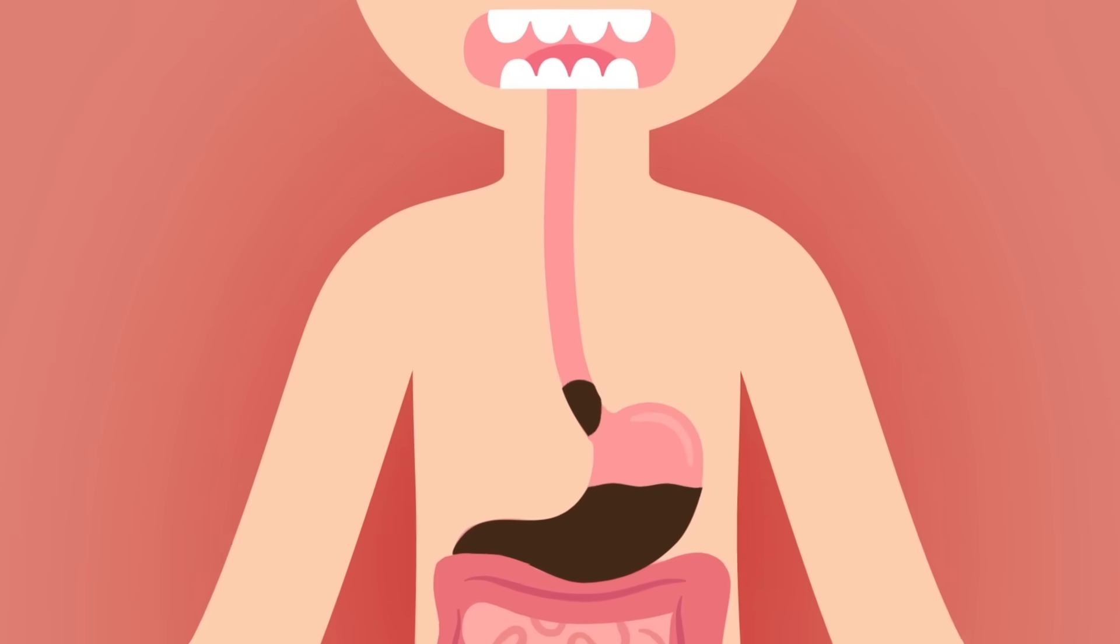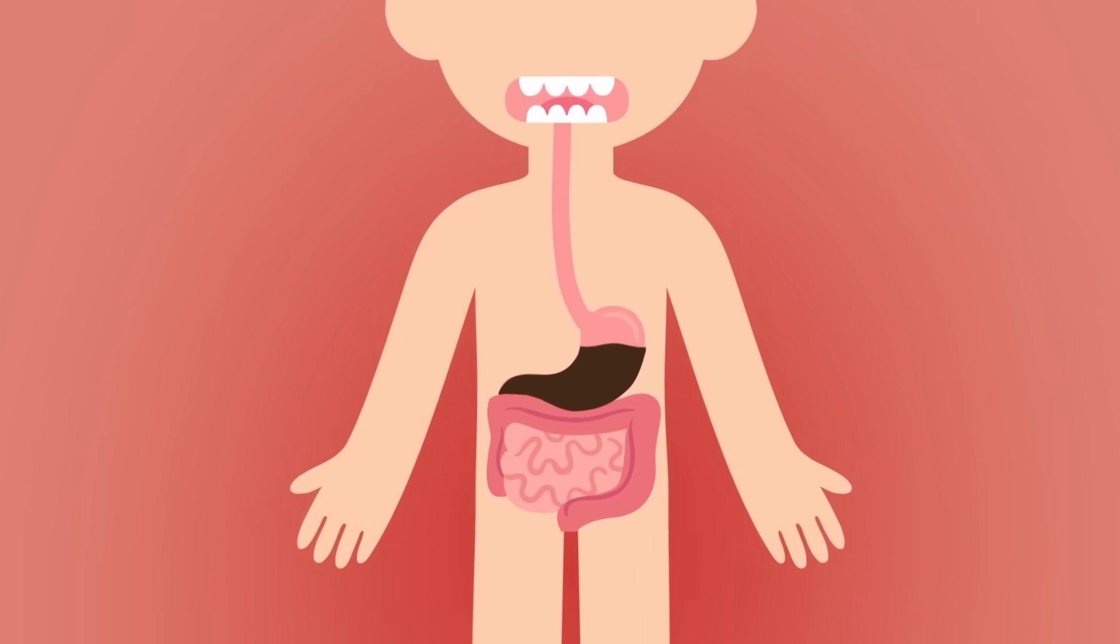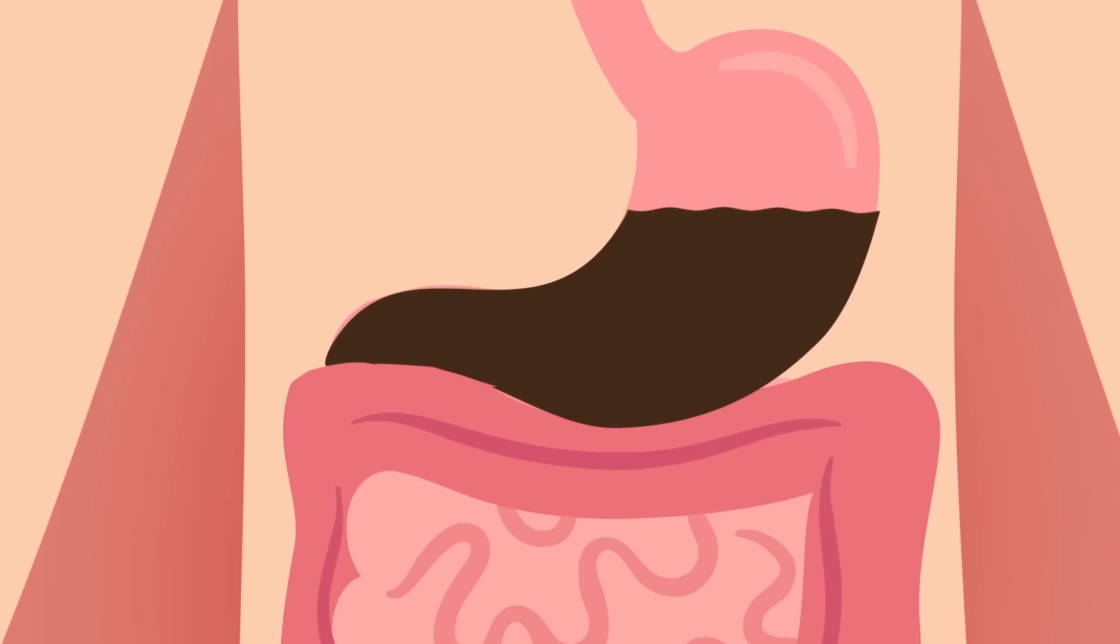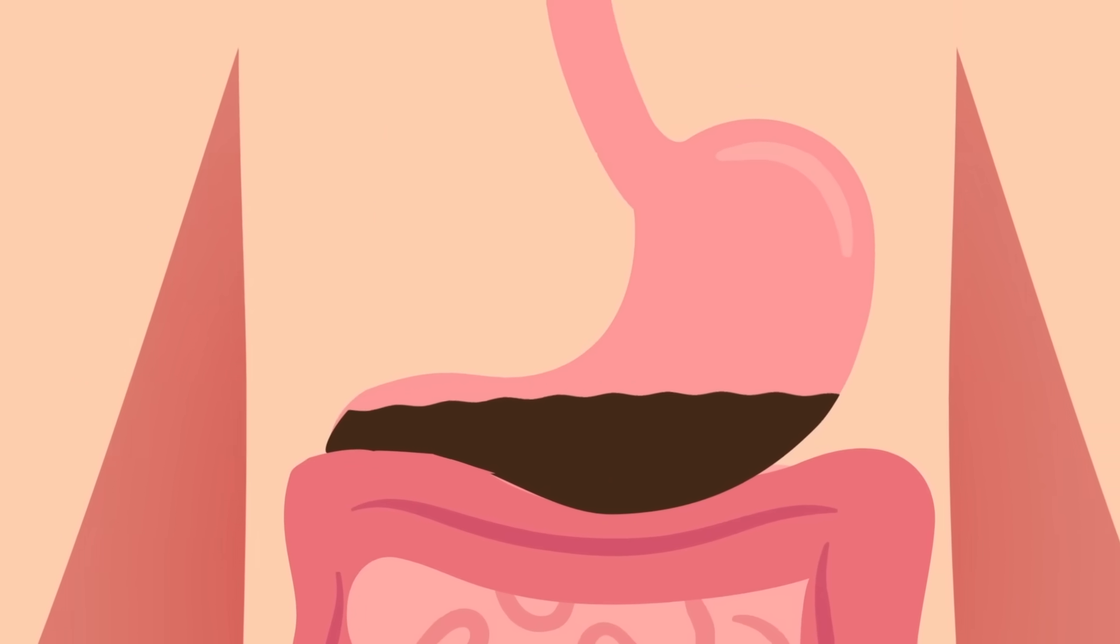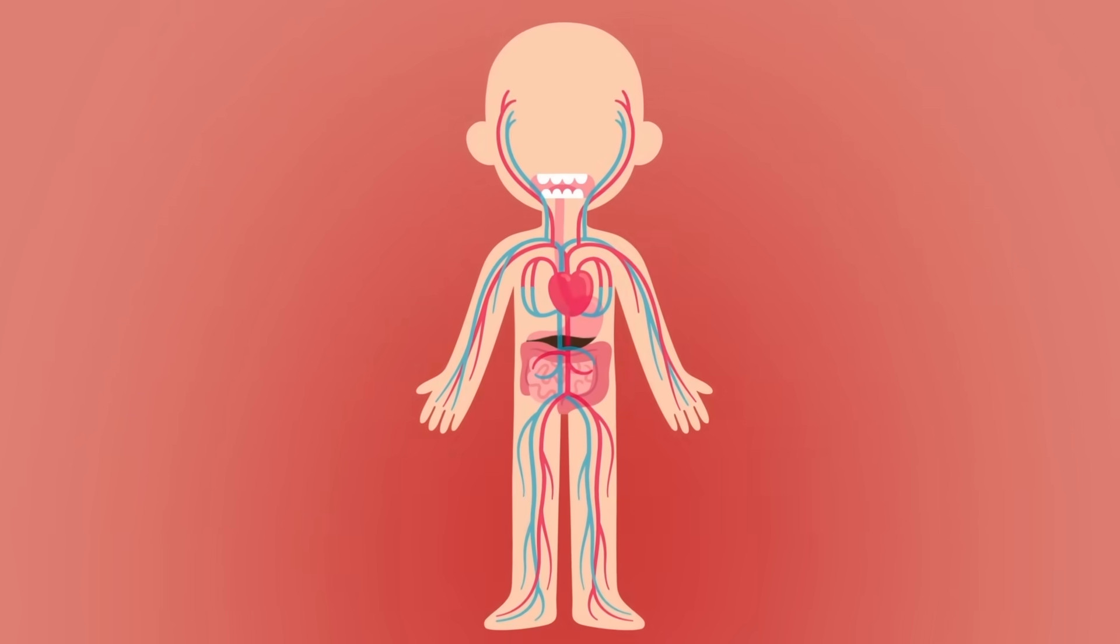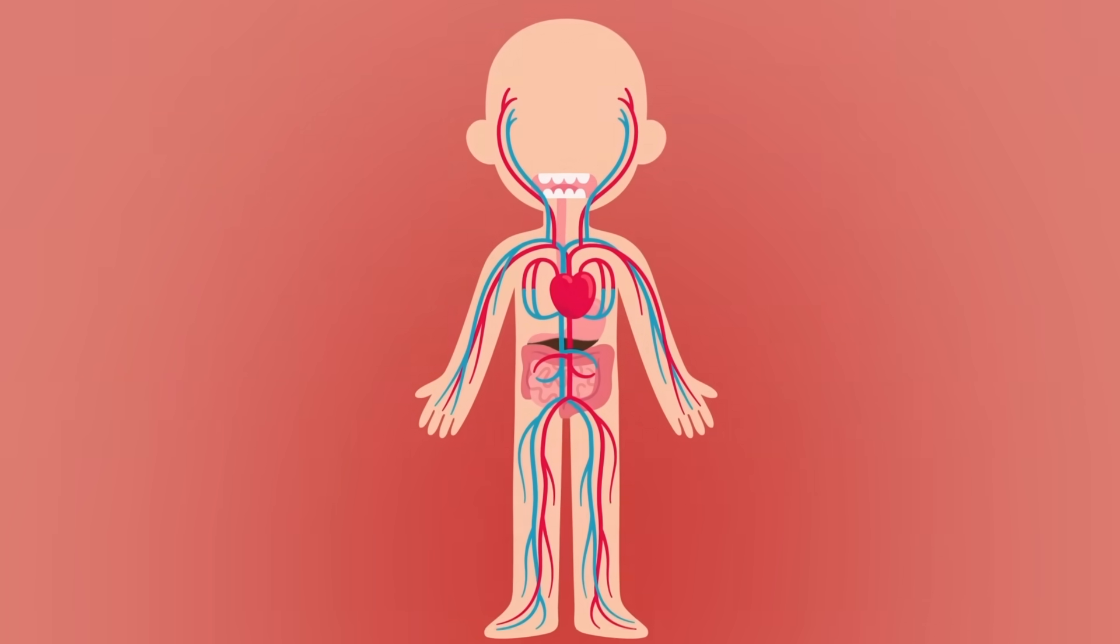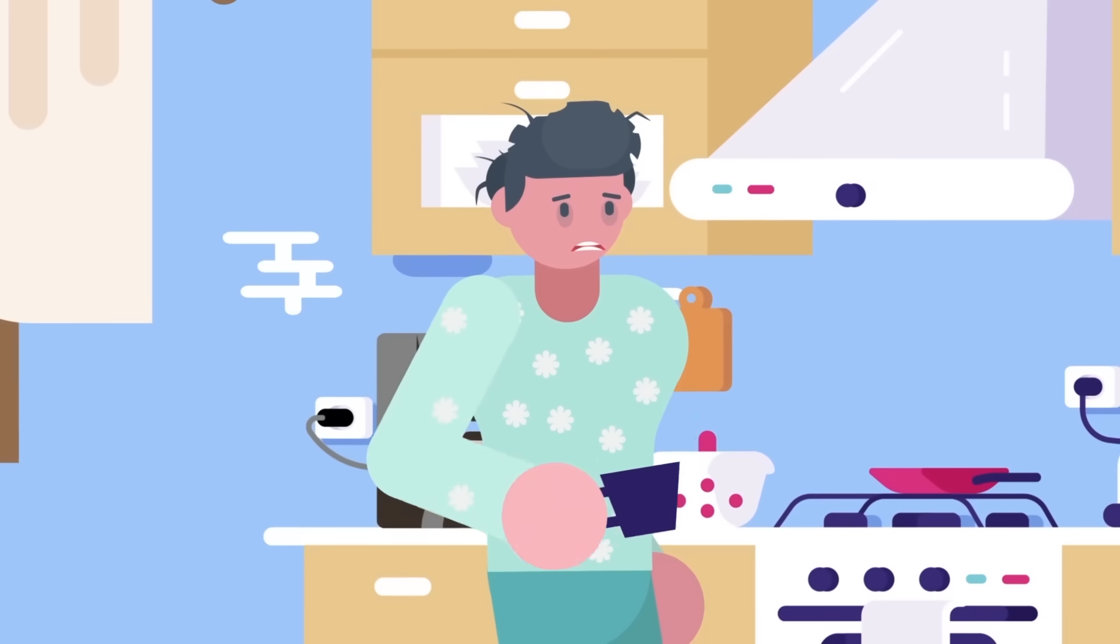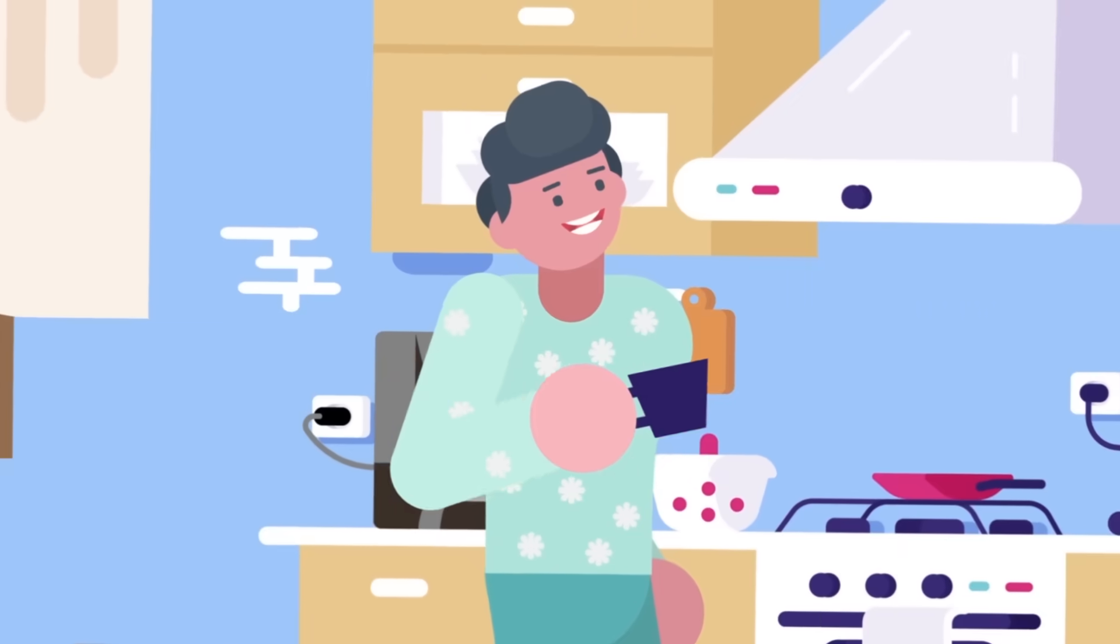Moments after your last sip of coffee, the liquid will descend down your esophagus and into your stomach. From there, some of the caffeine in the drink passes through your stomach lining and into your bloodstream. Seconds after that, the coffee will move into your small intestine where the rest of the caffeine diffuses through the tissue and begins fully circulating around your body. It only takes a matter of minutes before this process is complete. This is why it only takes a few sips of coffee to help you feel awake.